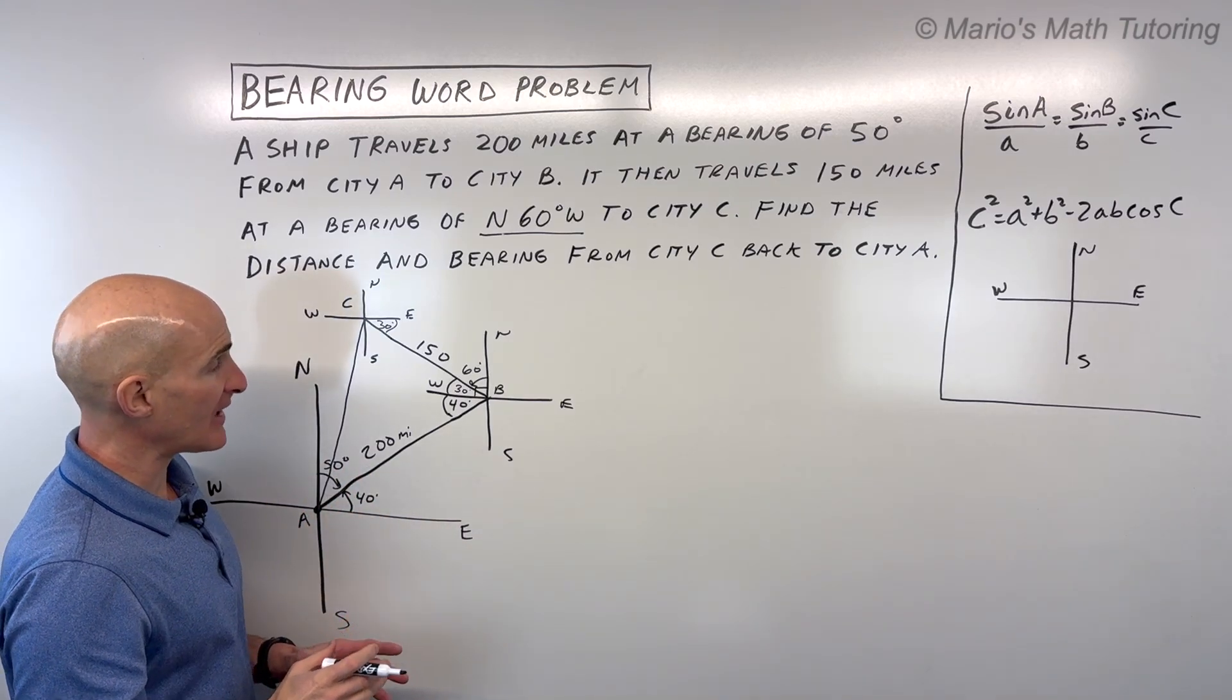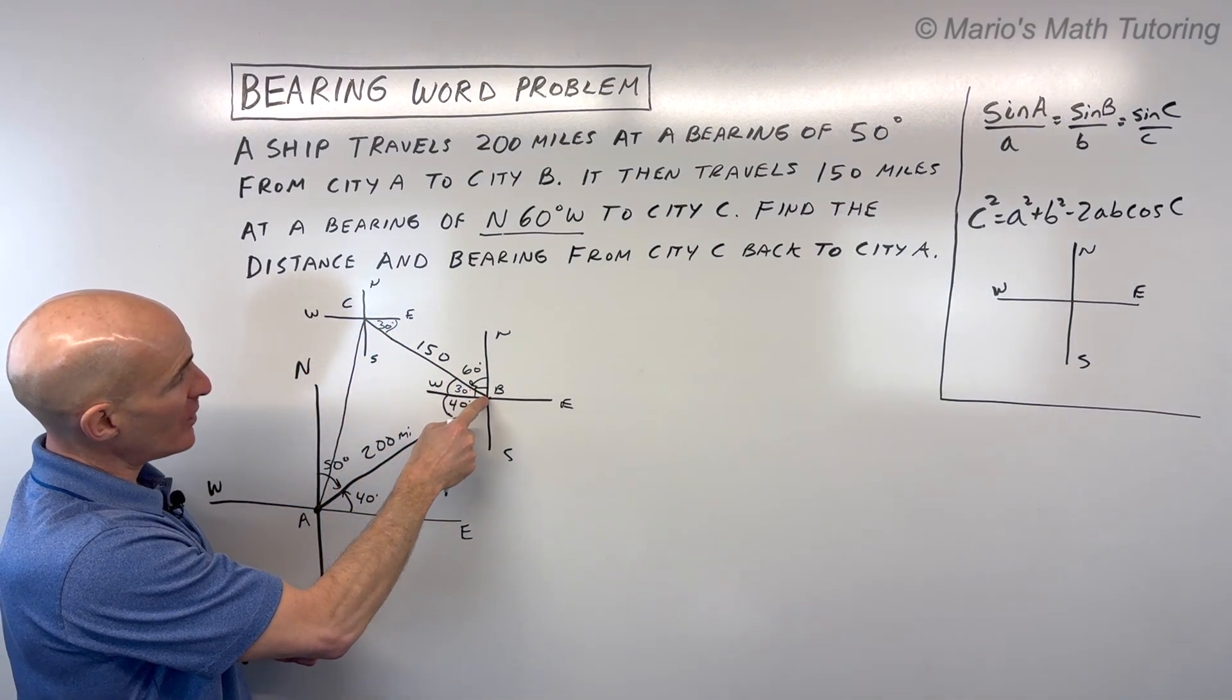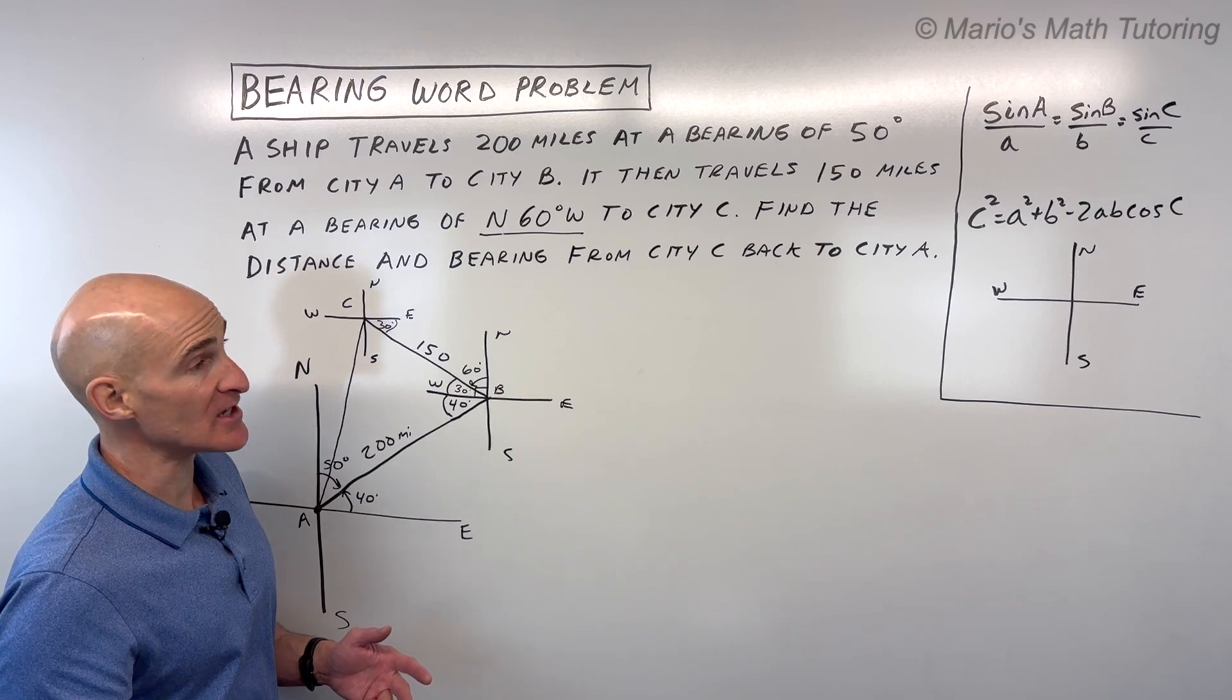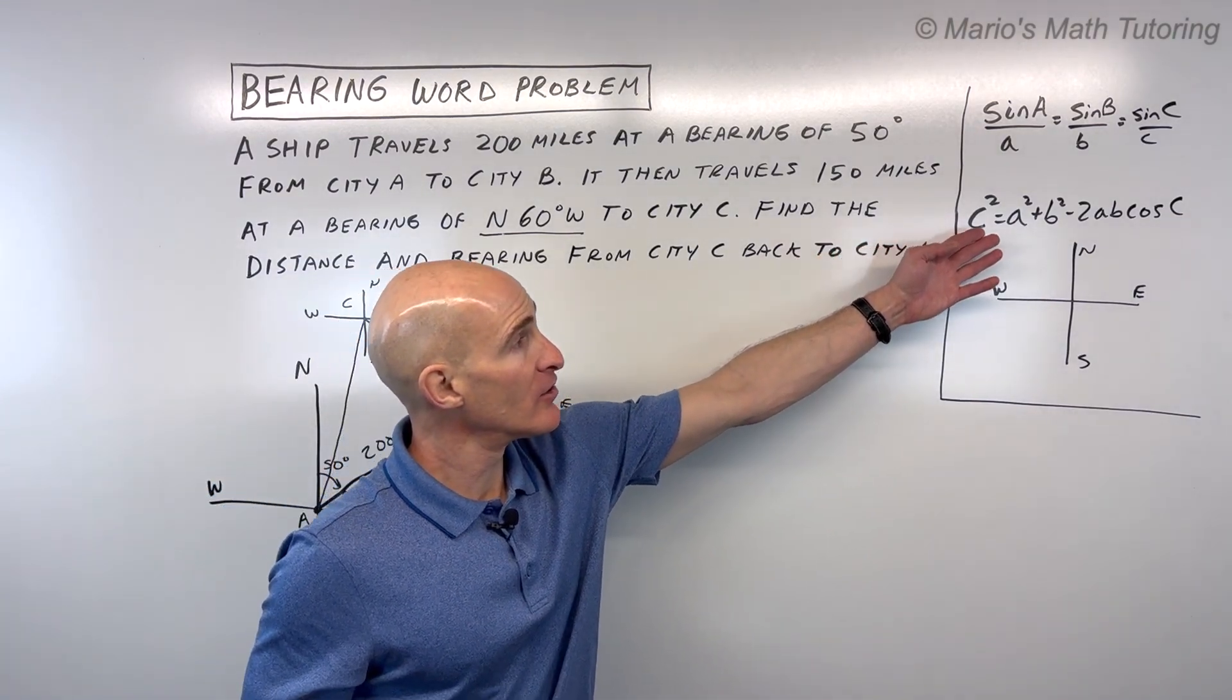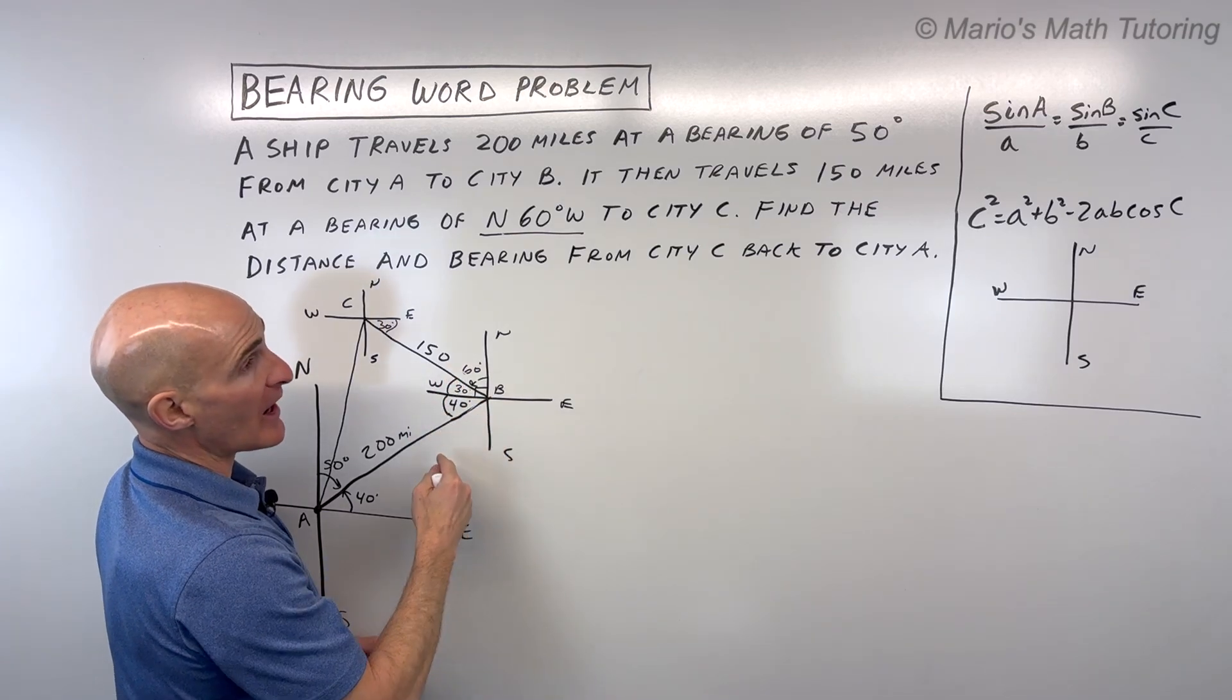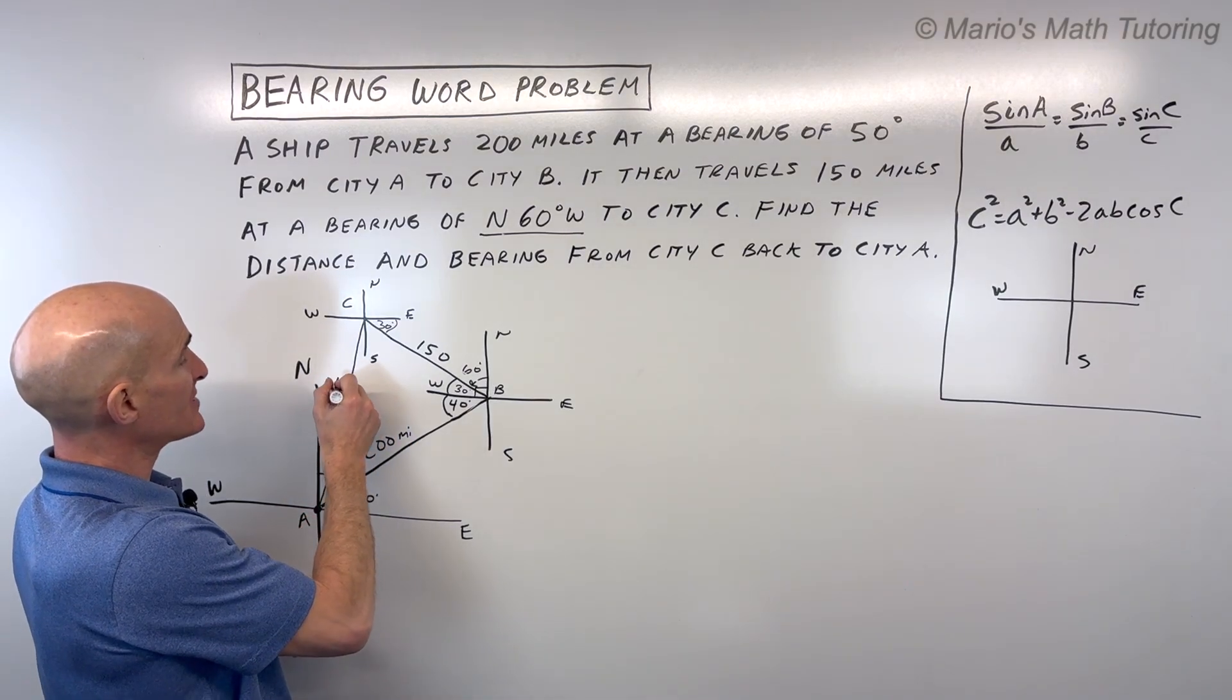But let's say we want to find this length now from city C back to city A. Well, look at what we have. We've got this side 150, we've got this side 200, and we have this angle in between, 30 plus 40, which is 70 degrees. So when you have side, angle, side, that's when you're going to want to use the law of cosines. So in this case, the A and the B, those are the two sides that make up this 70-degree angle, and then this is going to be our side C, the distance from city C to city A.